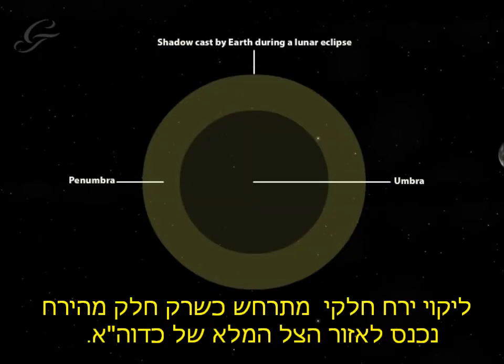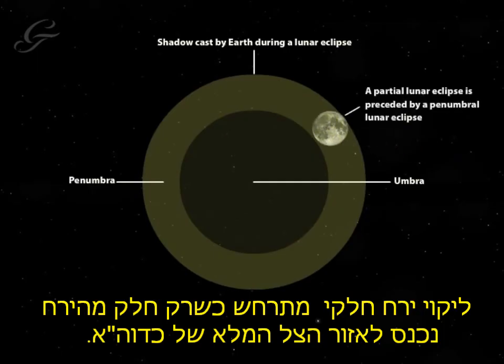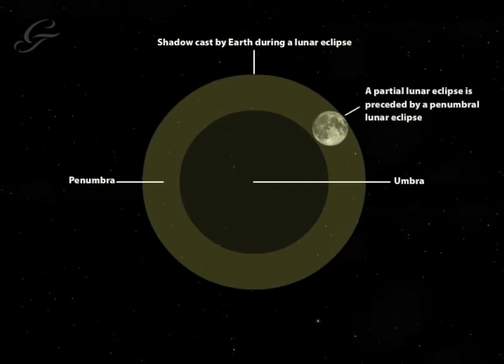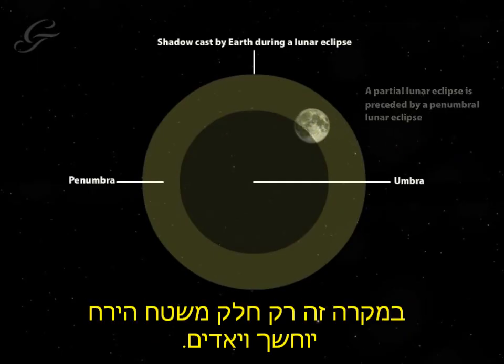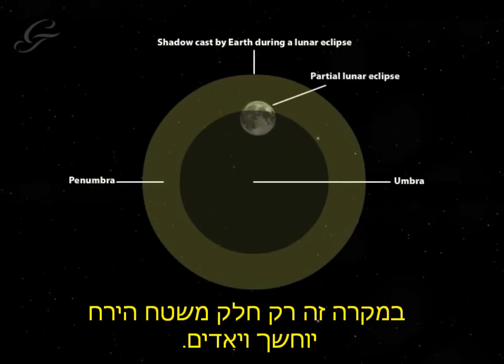A partial lunar eclipse occurs when only part of the moon enters the Earth's umbra. Just part of the moon's disk will go darker and redder, but at no point will all of it take on this colour.